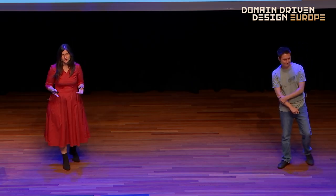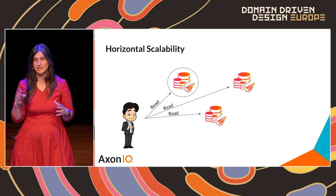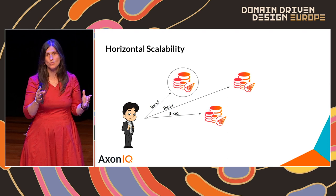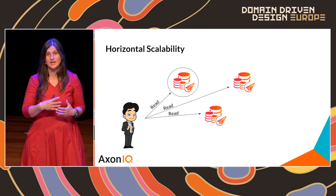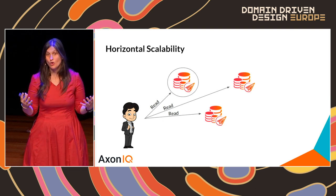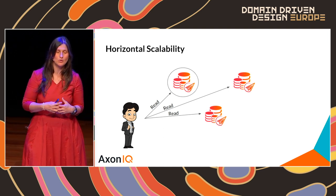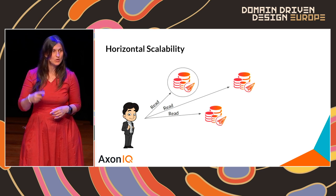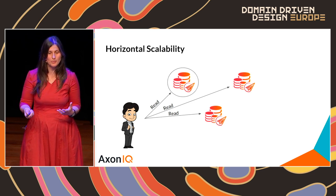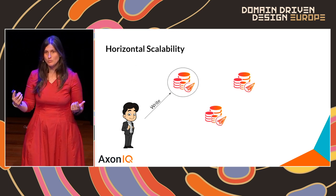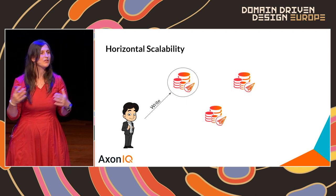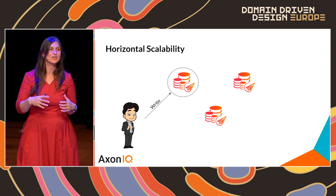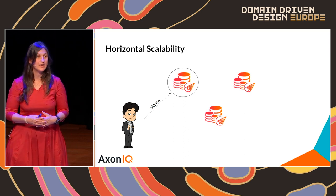Horizontal scalability is another solution, mainly useful for heavy read loads — since data is the same across instances, reads can be served by any node. However, with Raft, write operations must always go through the leader and be acknowledged by the majority of nodes, so adding more nodes does not effectively scale write load.